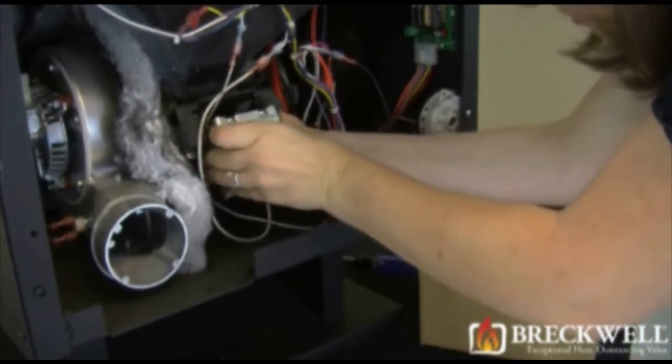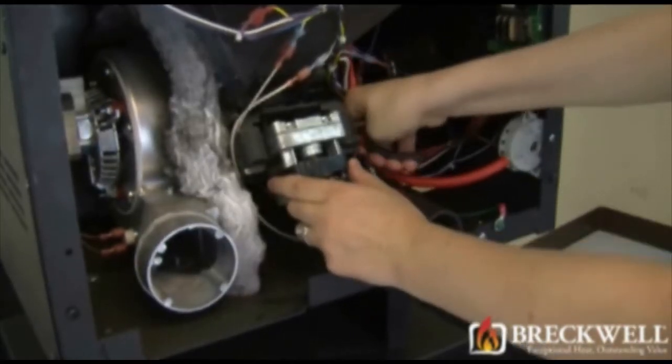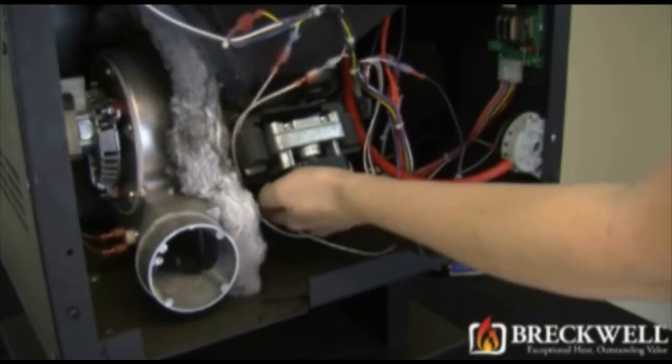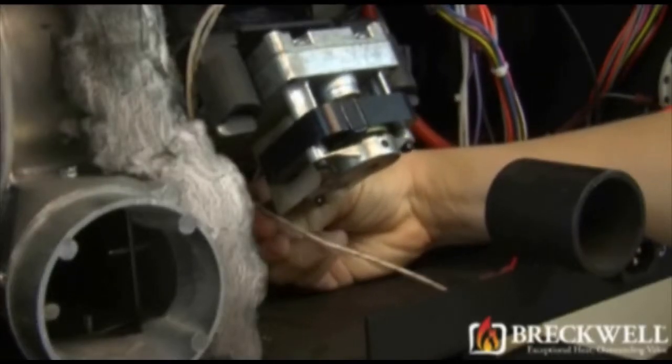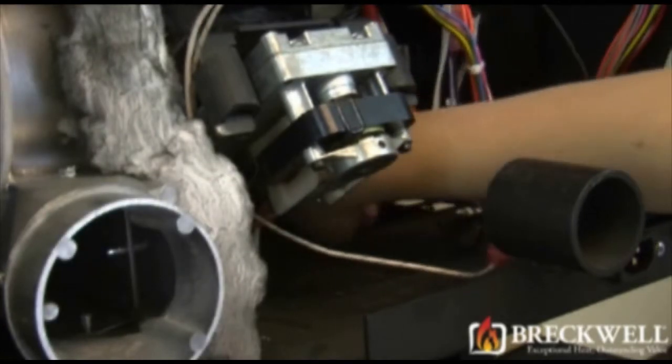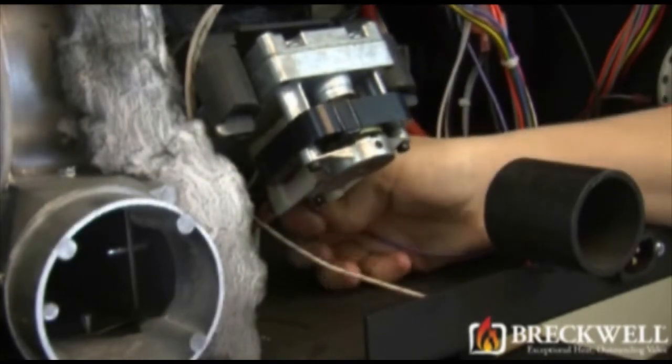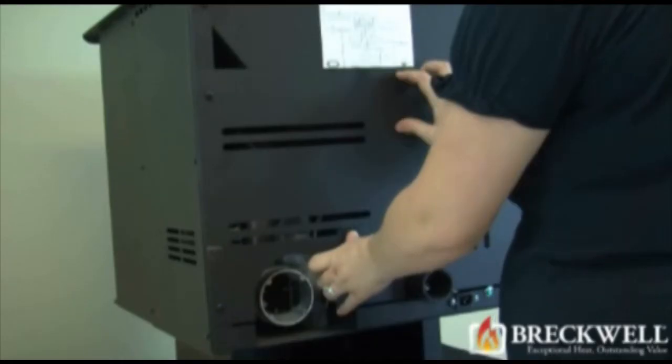To install the auger motor, simply place it between the two flanges, line up the hole in the auger shaft, and insert the retaining clip. Once the retaining clip is secure and the auger motor is in place, reconnect the two wire leads to the wiring harness.